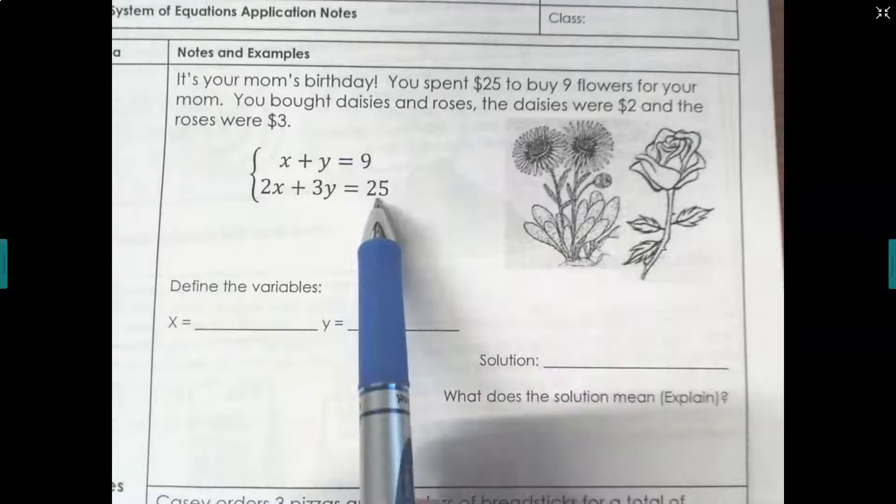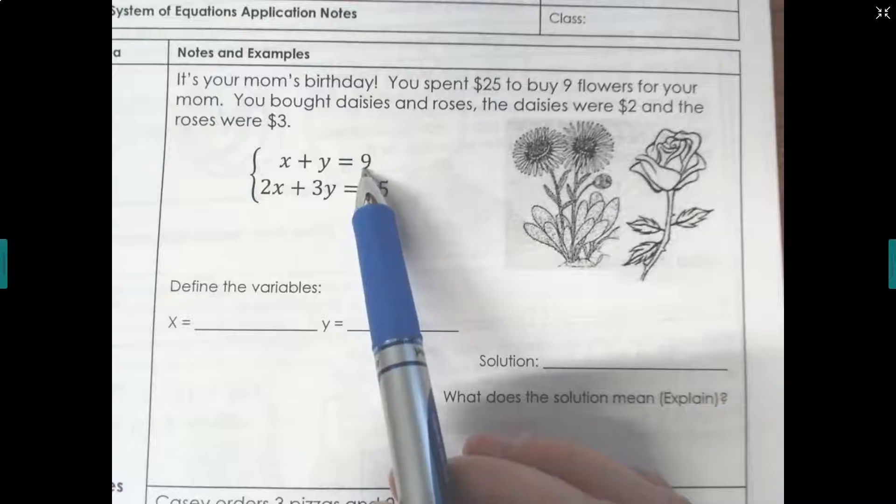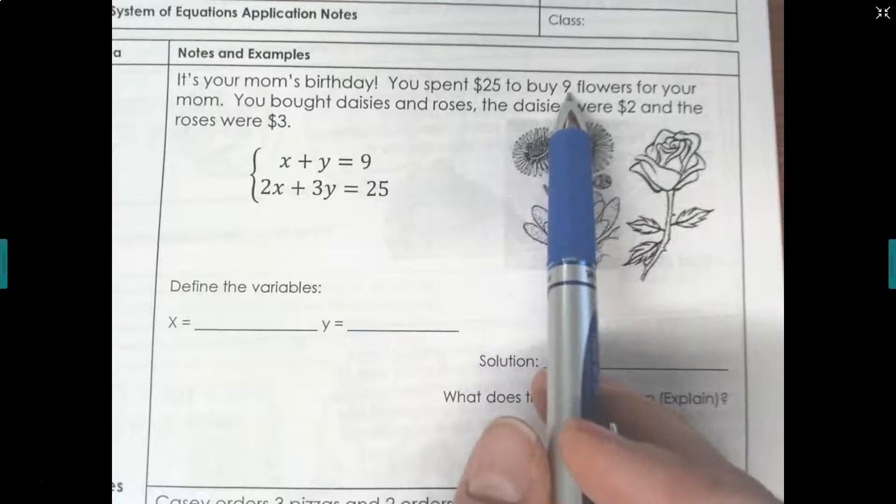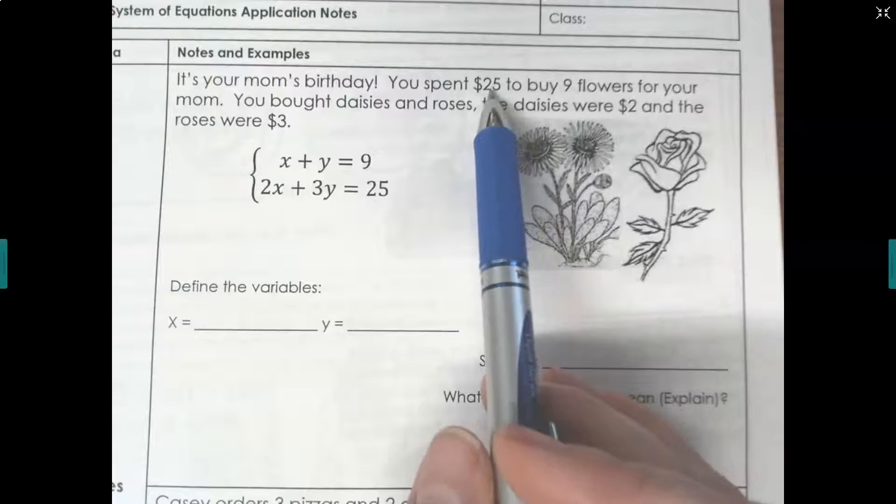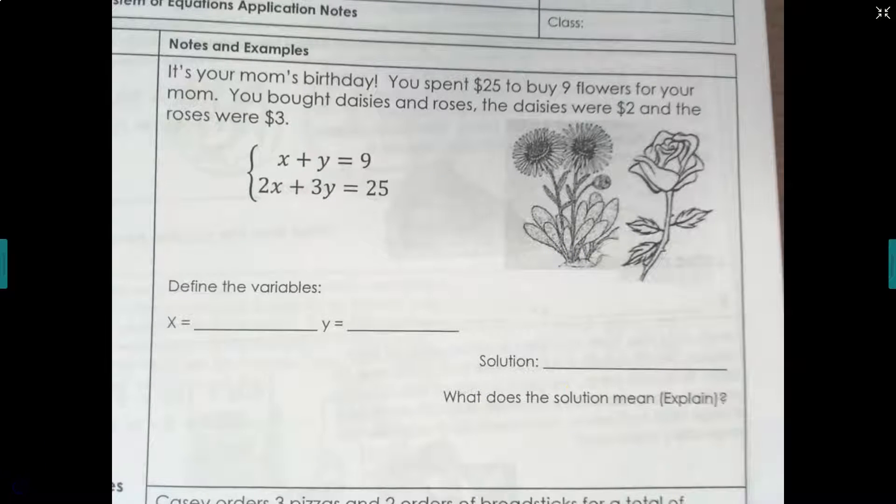We spent $25, here's where the 25 is, to buy nine flowers. Well, here's the nine. They're in the two different equations because one's talking about the number of flowers and one's talking about how much the flowers cost.